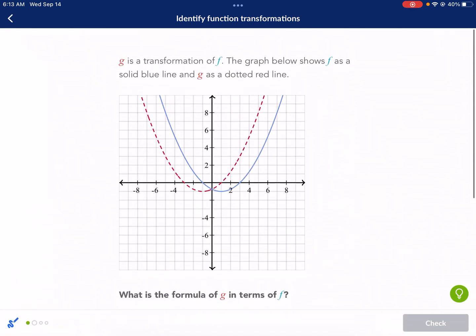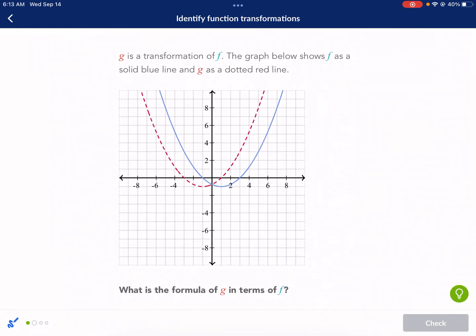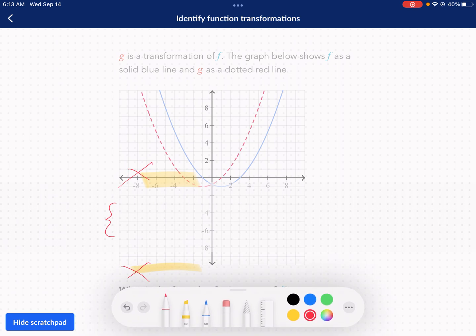Now, which is it? Well, let's take a look. We see that the blue starts over here. I'm just going to pinpoint the vertex. That's kind of an important point in these parabolas. And it looks like it moves over one, two to the left. So it's left two units.